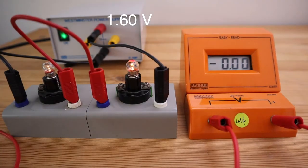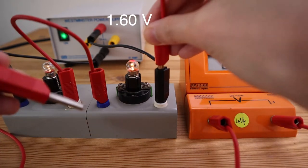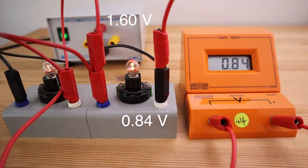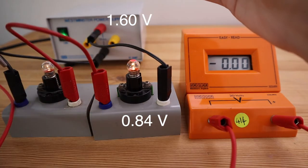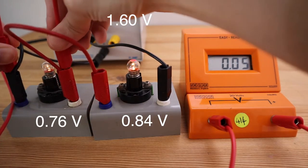In the second circuit, the voltage across one of the bulbs is 0.84 volts. Across the other bulb, the voltage is 0.76 volts.